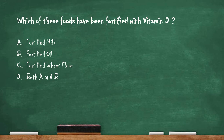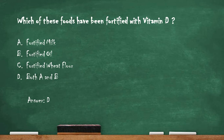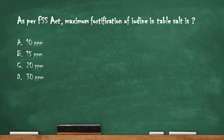Next question: which of these foods have been fortified with vitamin D? Option A: fortified milk. Option B: fortified oil. Option C: fortified wheat flour. Option D: both A and B. The right answer is option D — both A and B. Fortified milk and oil are mainly fortified with vitamin D.